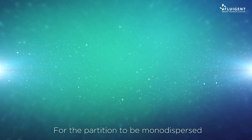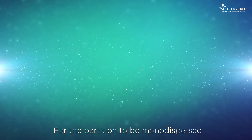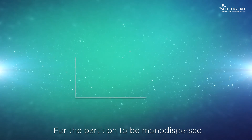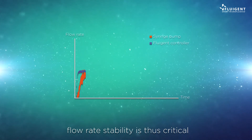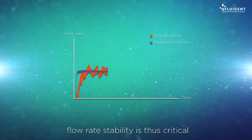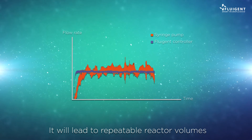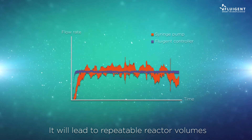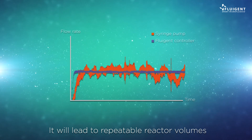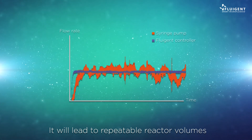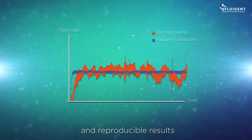For the partition to be monodispersed, flow rate stability is thus critical. It will lead to repeatable reactor volumes and reproducible results.